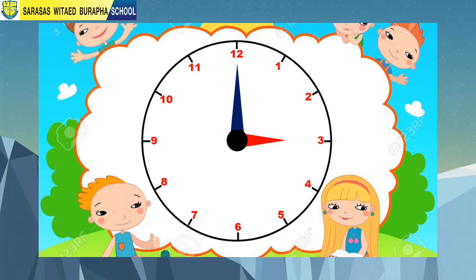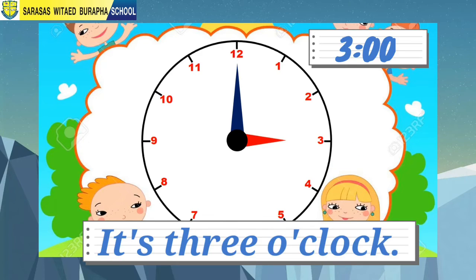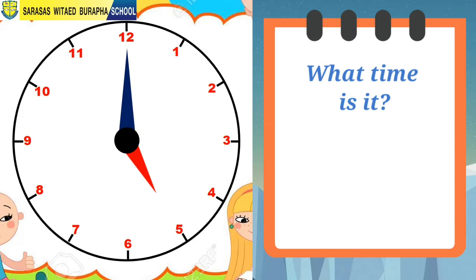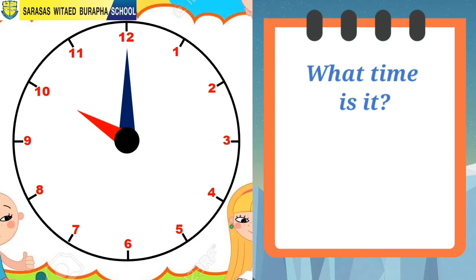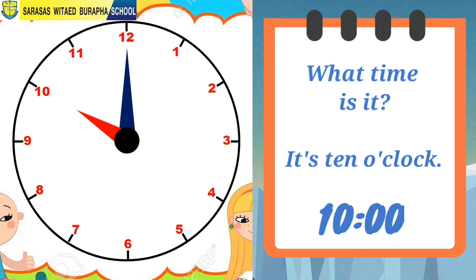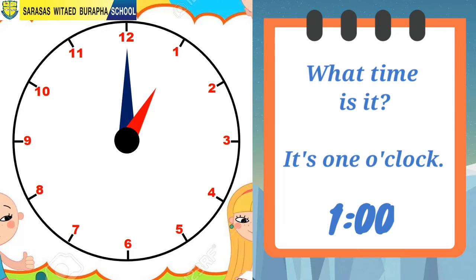Now remember: when the minute hand is pointing straight up on 12 and the hour hand is pointing on 3, the time is 3 o'clock. Can you tell what time it is? Did you say 5 o'clock? If so, then you are right! How about this? Did you say 10 o'clock? Then you are correct. And now — did you say 1 o'clock? Nice work.